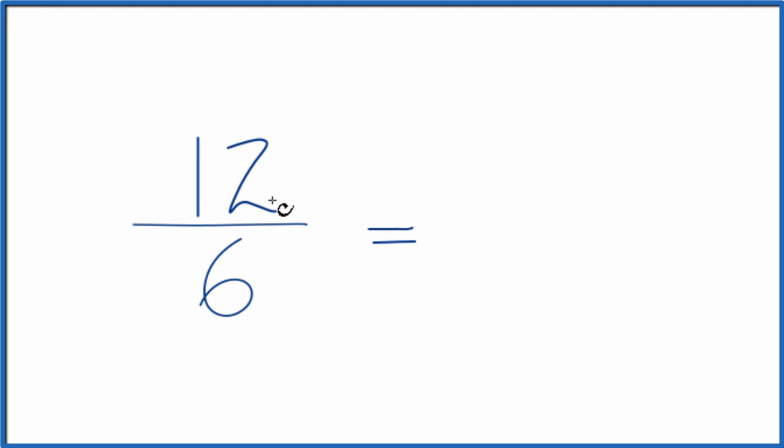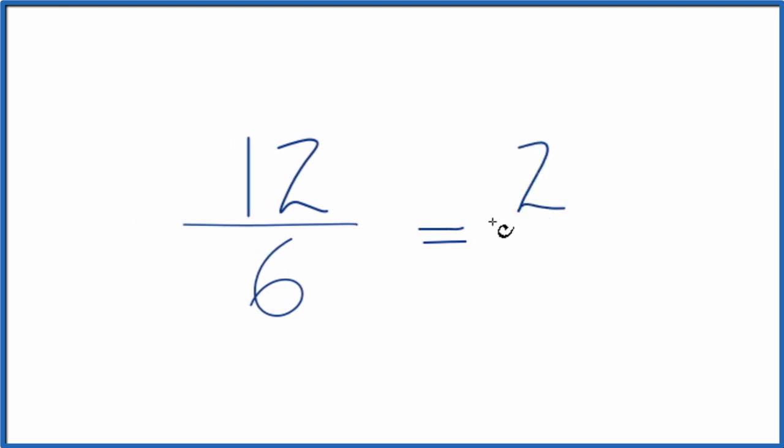It looks like 6 would go into 12 two times and it would go into itself 1. So 12 divided by 6, that would give us 2. 6 divided by 6 is 1, so the greatest common factor here was 6.